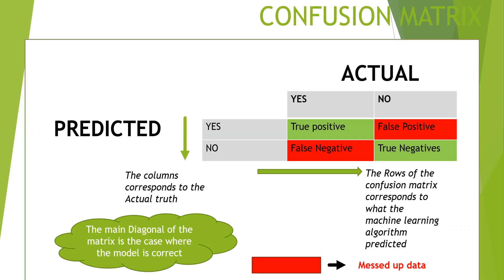There are four parameters of the confusion matrix: true positive, true negative, false positive, and false negative.